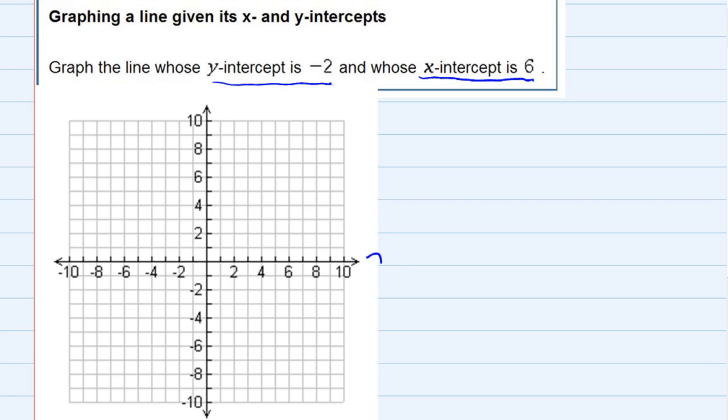So what we need to recall is that the x-axis is the one going left and right and the y-axis is the one going up and down. So whenever we're told the y-intercept is negative 2, the line that we're drawing has to cross the y-axis, the one going up and down.